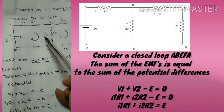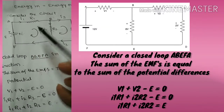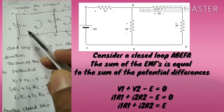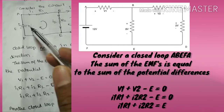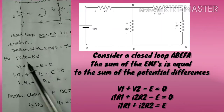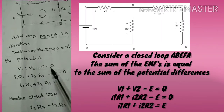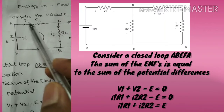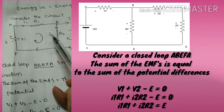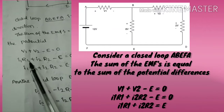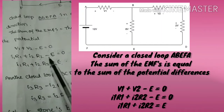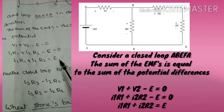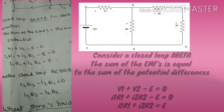In this loop, v1 = i1·r1 and v2 = i2·r2. Since we traverse the battery in the opposite direction, the EMF is taken as negative: v1 + v2 − e = 0, giving us i1·r1 + i2·r2 − e = 0, or i1·r1 + i2·r2 = e. This is the first loop equation.